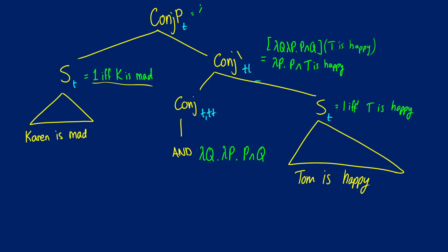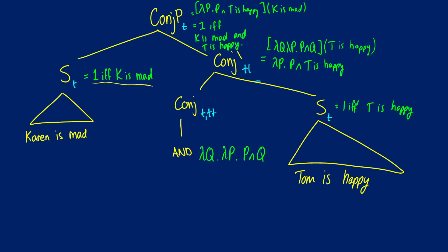What we have left is lambda P dot P and T is happy. We're then going to apply 'K is mad' to it, replacing our P. So this is going to be true if and only if K is mad and T is happy. This gives you the truth conditions for sentences with propositional conjunction.